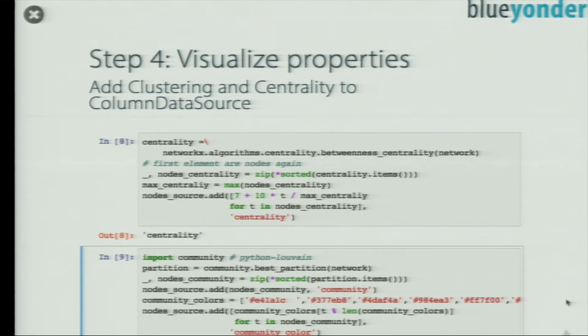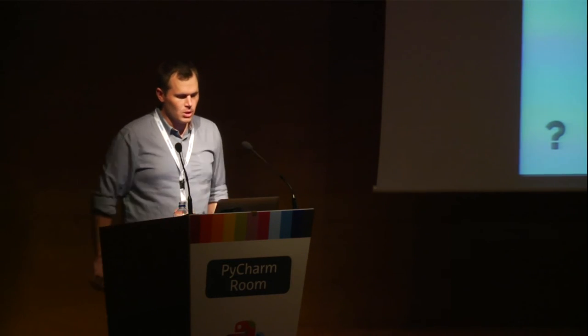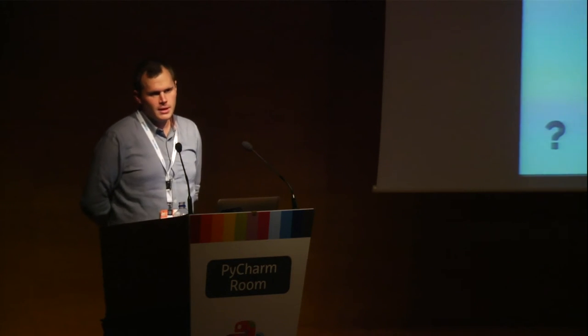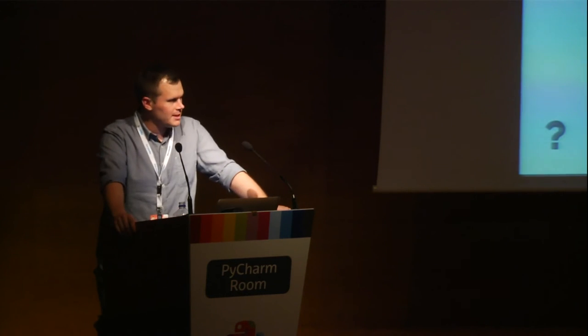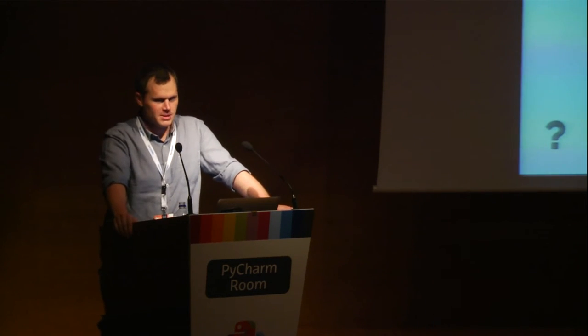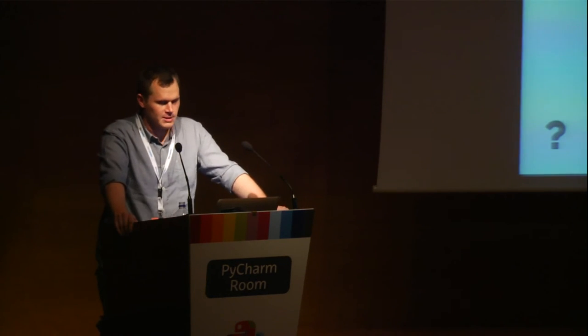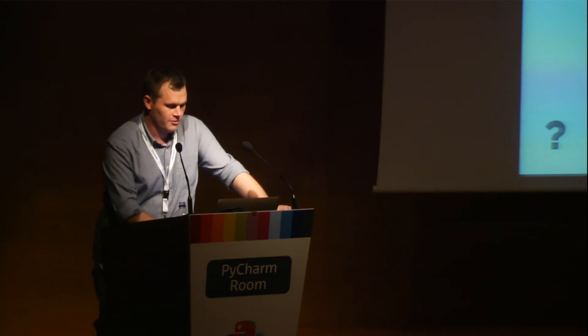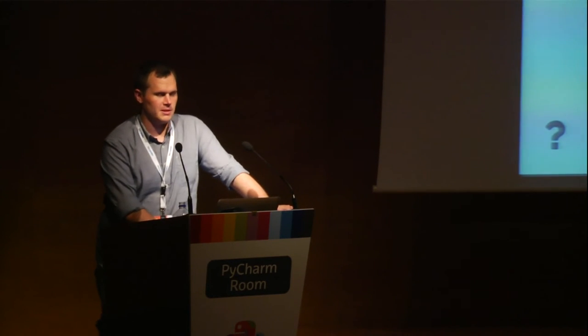The next point is I wanted to have some clustering — which nodes and people are maybe a bit connected because they tweeted about each other. I use the python-louvain module, an addition to NetworkX, which creates clustering for you. Clustering is NP-hard, so you won't always get the same result and it can take some calculation time. But for this size it's still great — even much bigger sizes work well. I get a partition, then split up the partition to get out the node communities. I add a new column 'community' to our ColumnDataSource.